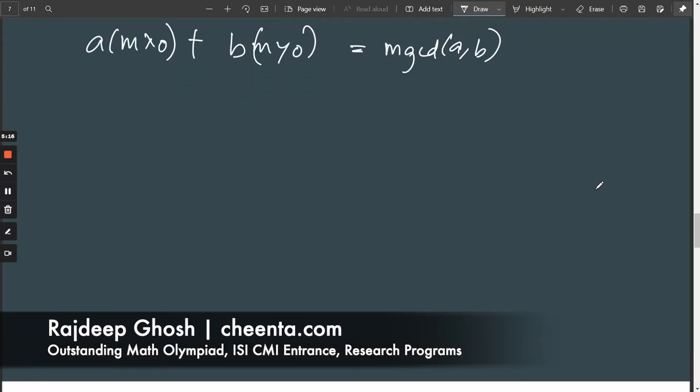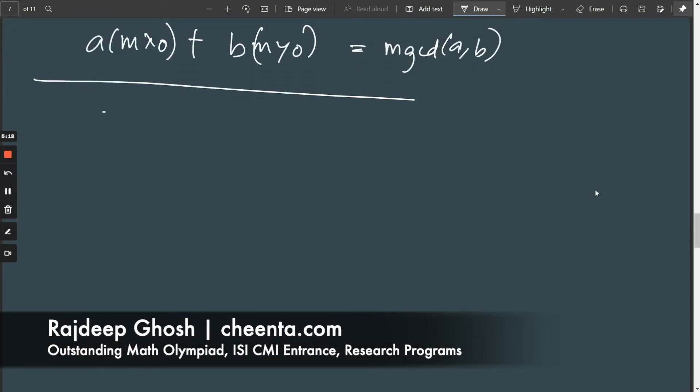So now we have a new question. The question is this. Given a and b, elements of Z⁺ positive integers, find x0 and y0 such that a·x0 + b·y0, again part of the integers, is equal to gcd(a,b). This is what we want to do.